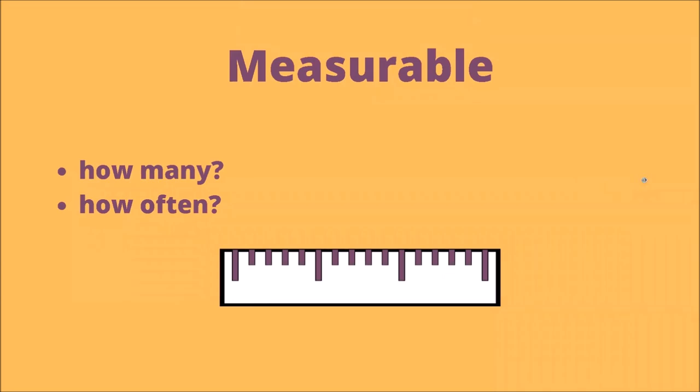The M of the SMART goal stands for Measurable — by that I mean how many and how often. How many could mean: how many chapters are there, or how many concepts are there? How many days or hours or periods are you going to spend teaching that lesson? And the second question could be how often — how often are you planning to test whether your audience is getting it or not? Those are the types of questions that you can ask yourself to measure your project.